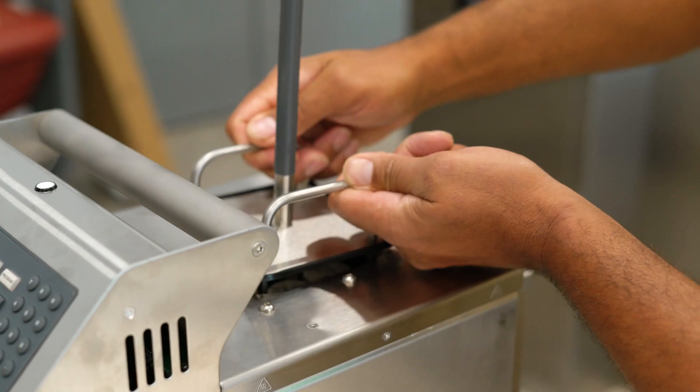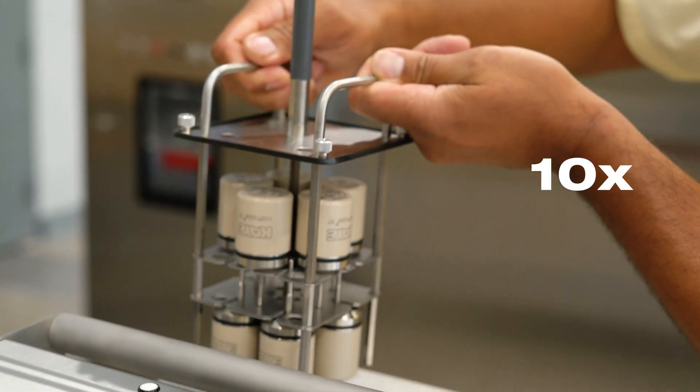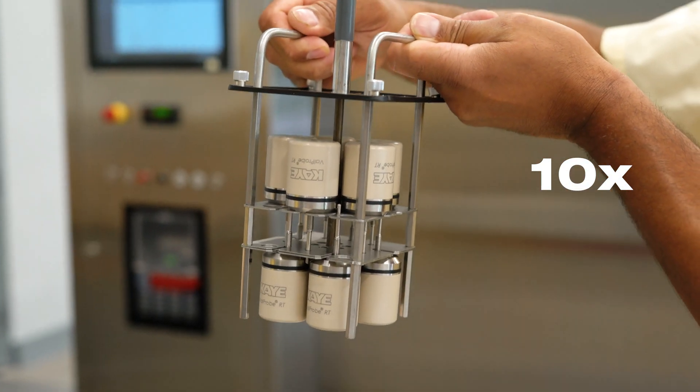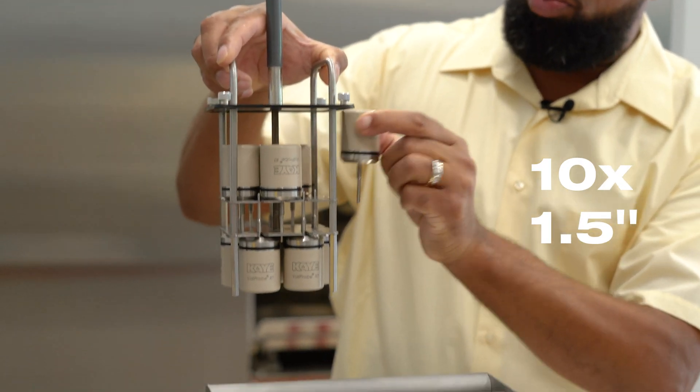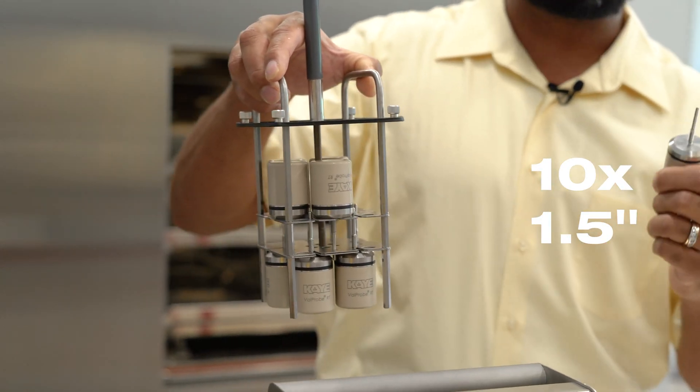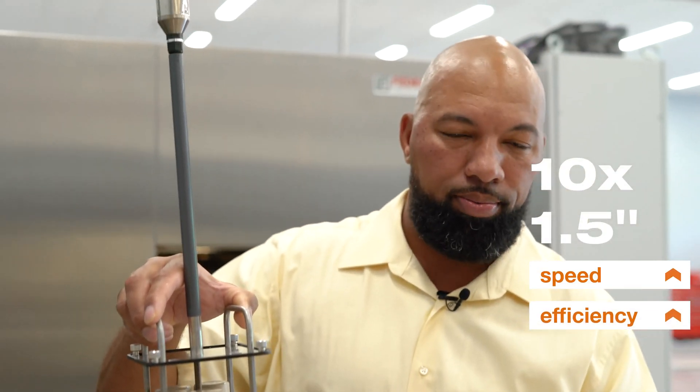This particular bath was designed for valve probes in mind specifically because you can actually insert 10 valve probes inside the basket. These are our one and a half inch rigid tip valve probes, and this bath will allow you to verify 10 at a time, increasing your speed and the efficiency of doing your verifications.